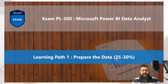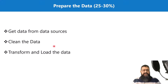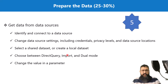This learning path has a weightage of 25 to 30 percent on the exam. It has three sections: the first one is 'Get Data from Data Sources,' the second one is 'Clean the Data,' and the third one is 'Transform and Load the Data.'